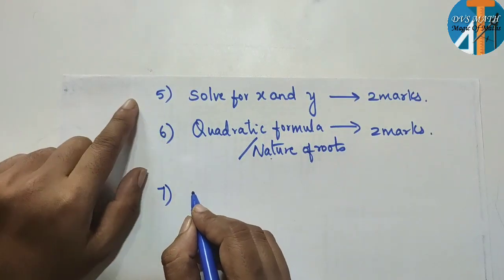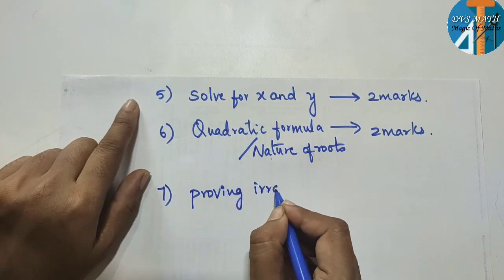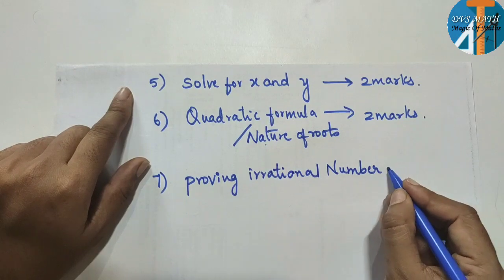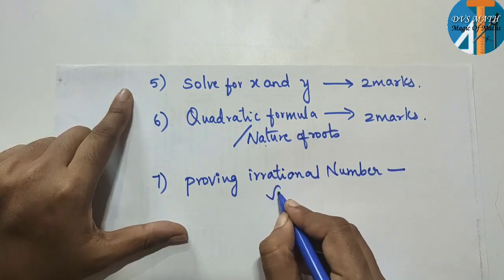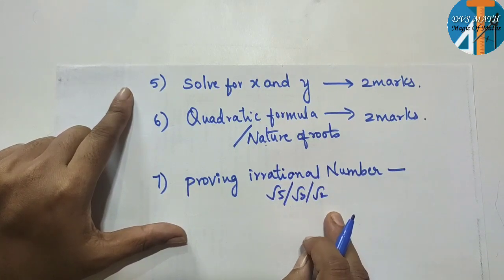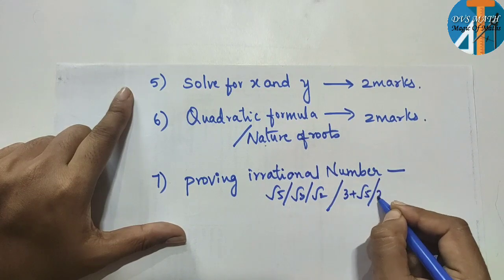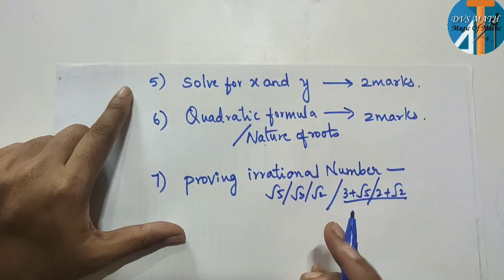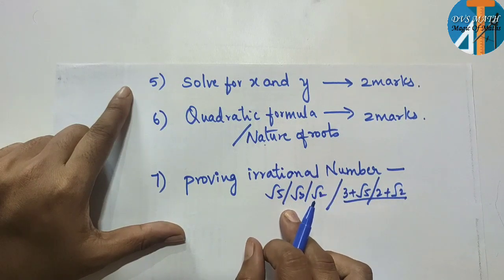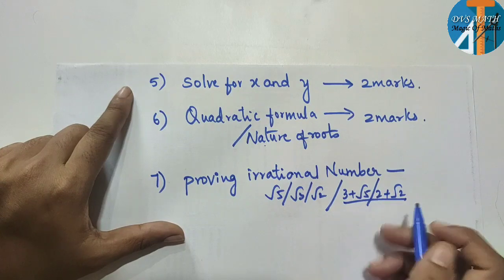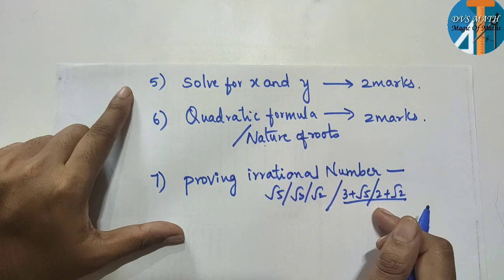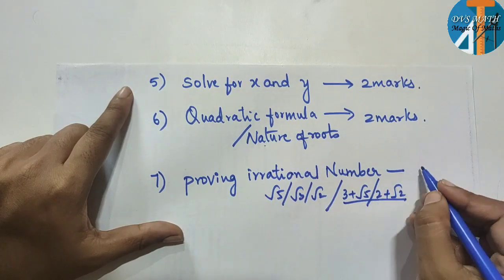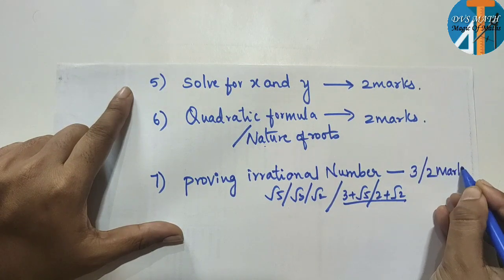Next is proving irrational number. For proving irrational number, there are two types: single irrational numbers like root 5, root 3, root 2, or combinations like 3 plus root 5 or 2 plus root 2. I will show you how to solve these easily. Practice these from the previous video — it is very simple. If you solve a single irrational number, you get 3 marks; for a combination, you get 2 marks.